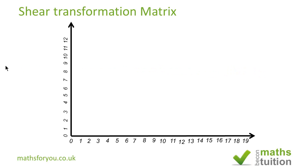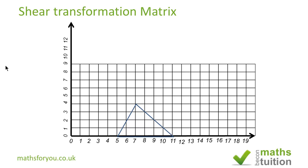Starting with a blank canvas, we draw in our triangle at (5,0), (11,0), and (7,4). We then say that our displacement from the (7,4) vertex is 8, and the distance from the invariant line — the x-axis — to the vertex (7,4) is 4. If you divide the displacement 8 by 4, you get a scale factor of 2.